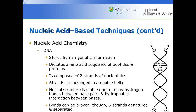So what does this DNA stuff look like? DNA stores human genetic information and encodes the amino acid sequence of peptides and proteins. It's composed of two strands of nucleotides — we've got the five prime and the three prime ends, a hydroxyl end and a phosphate end. The strands are arranged in what's called the double helix, and the helical structure is stable due to many hydrogen bonds between base pairs.